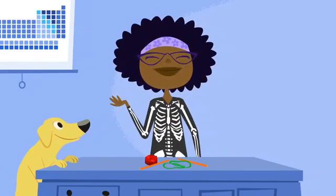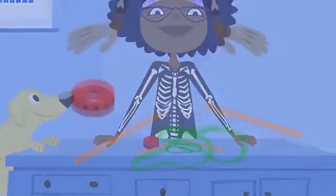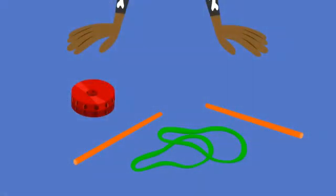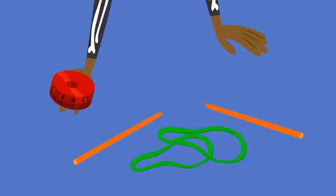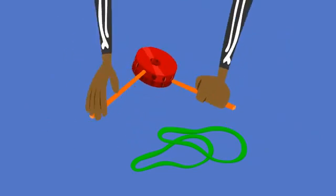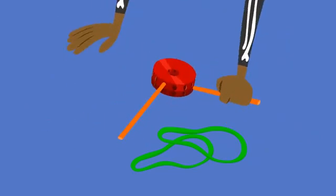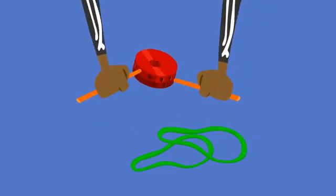Come closer, so you can get a good look. These two straight pieces are like bones. This round piece is like a joint. I'll connect these two straight pieces to the joint like so. The joint connects the bones so they can still move. That's how your arm bends at your elbow.